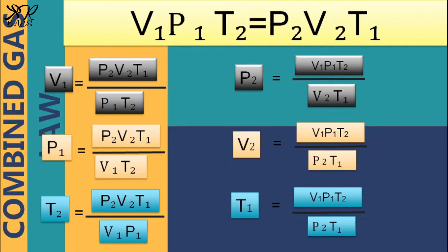From this, we can derive the following formulas. In solving for the initial volume: V₁ = (P₂ × V₂ × T₁) / (P₁ × T₂). In solving for the initial pressure: P₁ = (P₂ × V₂ × T₁) / (V₁ × T₂). In solving for the final temperature: T₂ = (P₂ × V₂ × T₁) / (V₁ × P₁). In solving for the final pressure: P₂ = (V₁ × P₁ × T₂) / (V₂ × T₁).